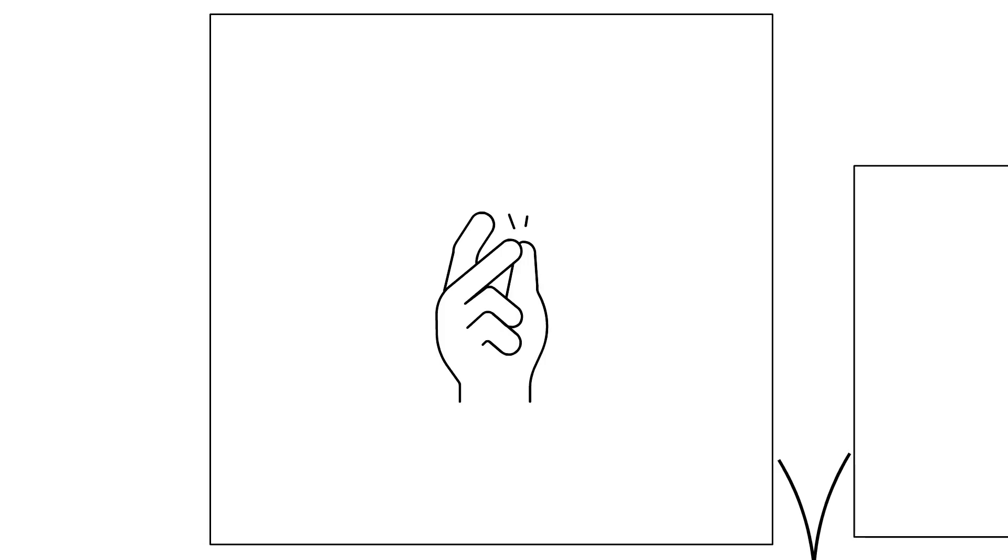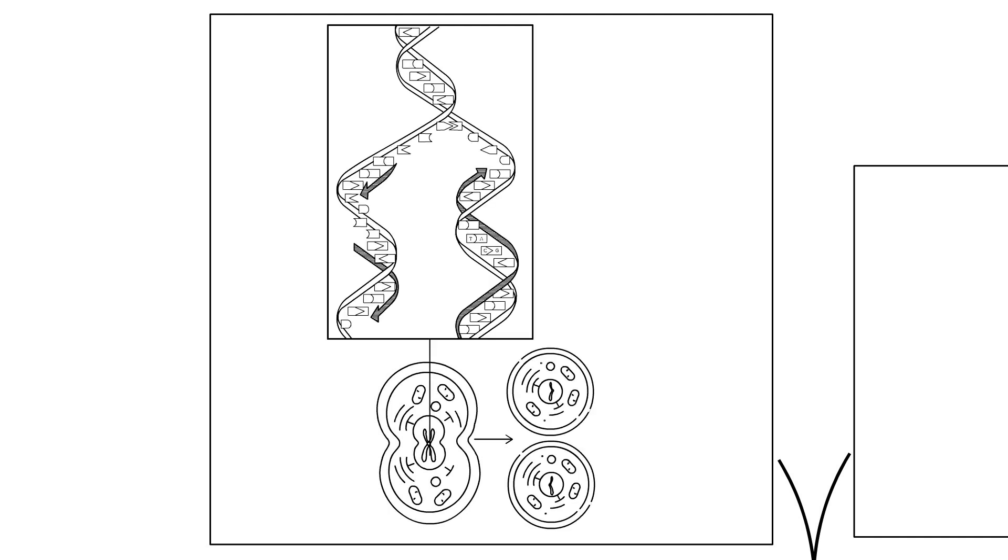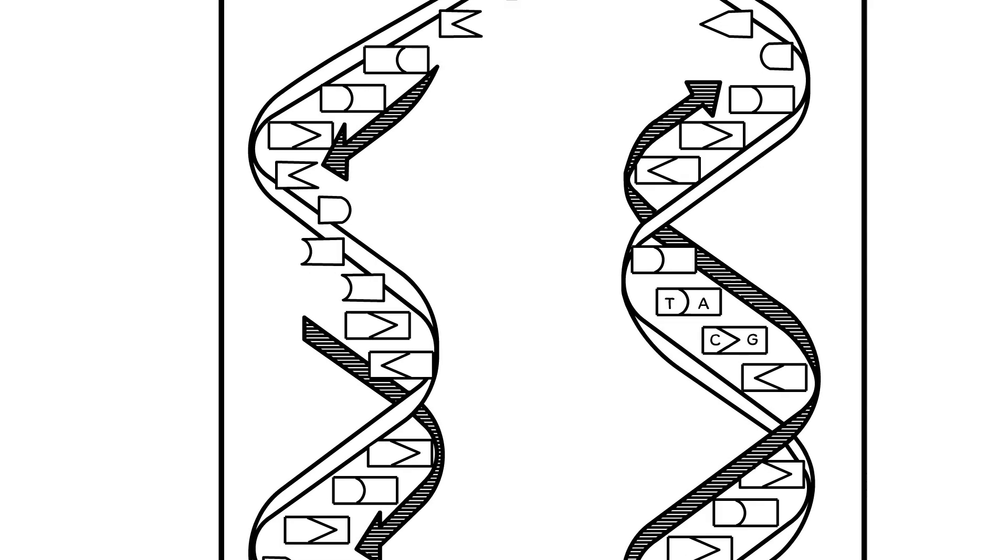There are two main causes that give rise to genetic variants. First, they may arise spontaneously. Every time a cell divides, billions of nucleotides need to be copied and mistakes inevitably happen.